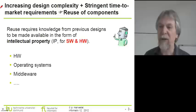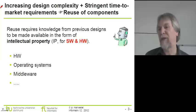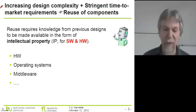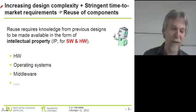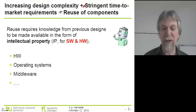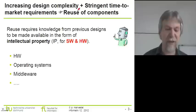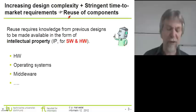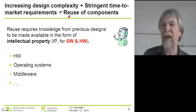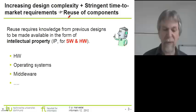What is the motivation for looking at system software in this context? Looking at system software is motivated by two conflicting goals for the design of embedded and cyber physical systems. On one hand, the design complexity of such systems is increasing — they become overwhelmingly complex. On the other hand, there are very stringent time-to-market requirements, so these products have to be designed very quickly so that vendors do not miss their market window.